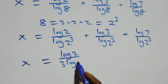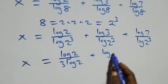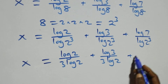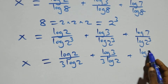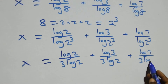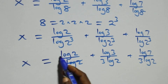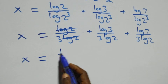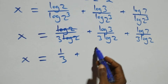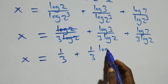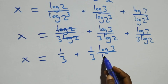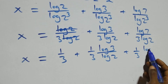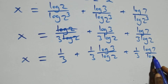So we have x equals to log 2 over 3 log 2, plus log 3 over 3 log 2, plus log 7 over 3 log 2. Log 2 cancels with each other and we have x equals to 1 over 3 plus 1 over 3 times log 3 over log 2, plus 1 over 3 times log 7 over log 2.